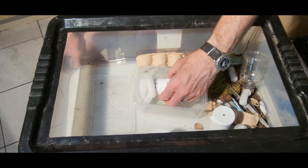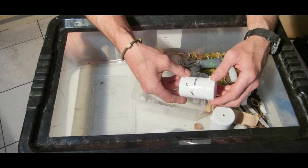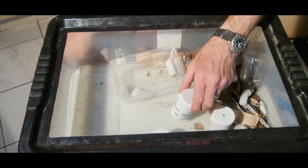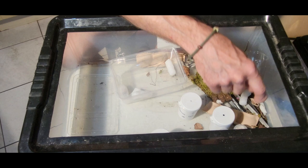Last one: Acanthoscurria geniculata GIMP subadult. I haven't got one of these. Acanthoscurria geniculata, so they're a new world growing species, stripey knees. That's what we've got - eight spiders in the box there for 60 quid. Not bad, is it?